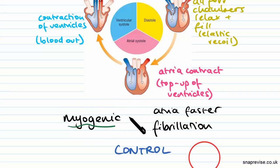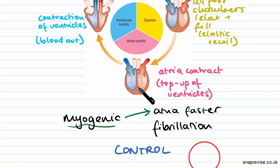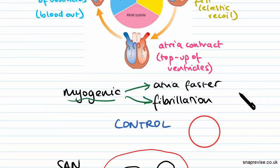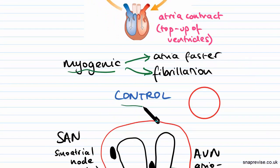Unfortunately, if cardiac muscle were just left to contract by itself, the atria actually contract slightly faster than the ventricles. This is not great because it can lead to fibrillation — we'll see some ECG traces of fibrillation later. Essentially, fibrillation is not great, so we need some way of controlling the heart.